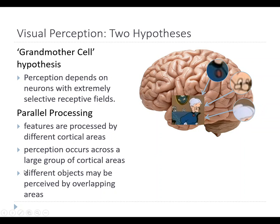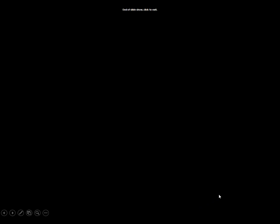Different objects or faces may involve the activation of different, overlapping networks of brain regions processing the same image. The actual mechanism for how visual perception works is still an open question, but there are interesting models being developed, and more recent research may have advanced our understanding. That is the end of this chapter on the visual system. We will move on next to the auditory system.